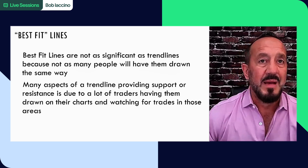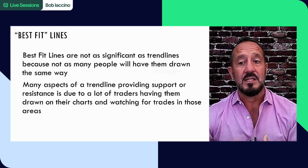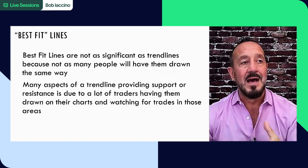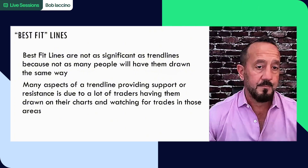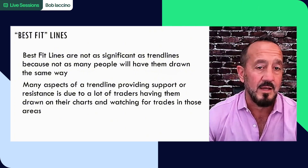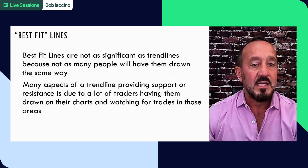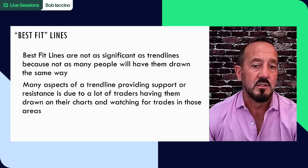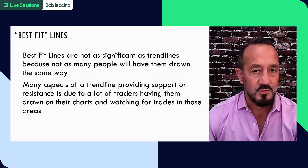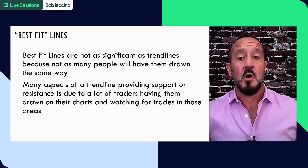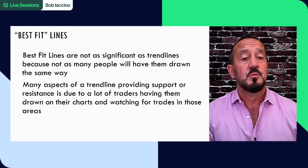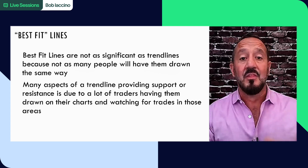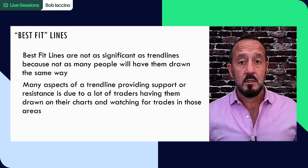We call these kinds of trend lines best fit lines instead of trend lines, because they're the best fit for the way that particular trader is looking at them. Best fit lines are not as significant as traditional trend lines because not as many people will have drawn them the same way. Many aspects of a trend line providing support or resistance is due to a lot of traders having the same trend line drawn on their charts and watching for trades in those areas. It's mob rules. At the end of the day, markets are mob rules, which is part of the reason we try to teach you guys risk management.